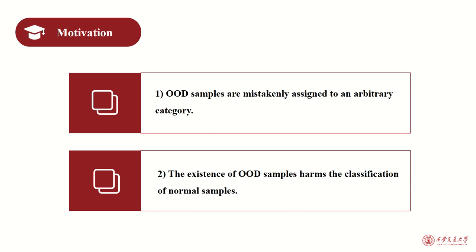GFSC models without the awareness of OOD samples will categorize an unobserved class sample into existing classes. These models face two dilemmas: one, OOD samples are mistakenly assigned to an arbitrary category, and two, the existence of OOD samples harms the classification of normal samples. Meanwhile, models with the awareness of OOD samples can better categorize normal samples into their proper classes if we can identify OOD samples.